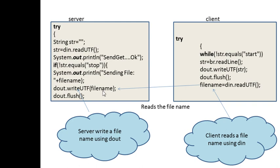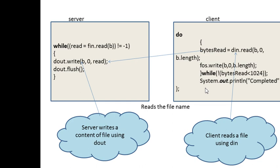Writing the filename is done like this and reading is done like this. After the filename is read by the client, the server needs to send the contents of a file to the client. The contents of the server file are passed to the client by reading the content using fn, a FileInputStream reference. fn reads the content, puts it in the buffer, and uses dout, the DataOutputStream, to write it into a buffer. This buffer is then read using din, the DataInputStream, which reads until it reaches the end of the file.